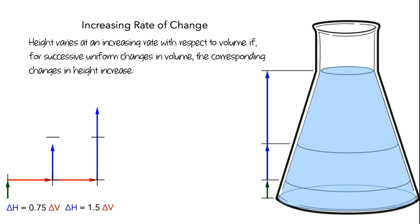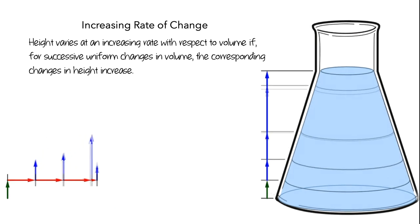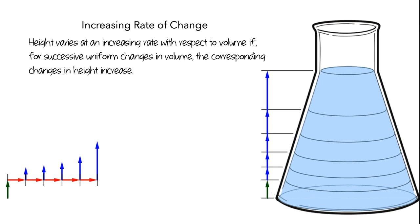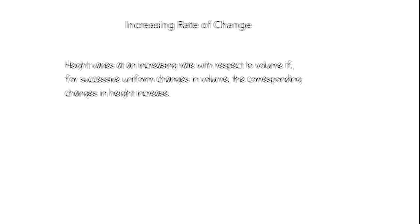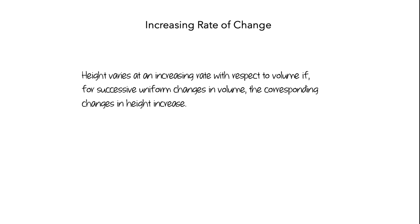Let's see what would happen if we split the added volume into five sections. Now we've split the amount of change in volume into five uniform segments. You can see that for the first amount of change in volume, the corresponding amount of change in height is small. And for successive uniform changes in volume, the corresponding changes in height increase. So this is what it means to have an increasing rate of change: for successive uniform changes in volume, the corresponding changes in height increase.